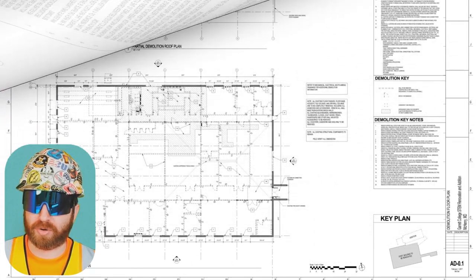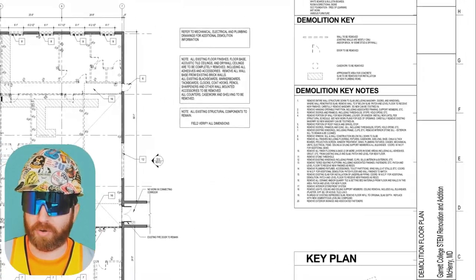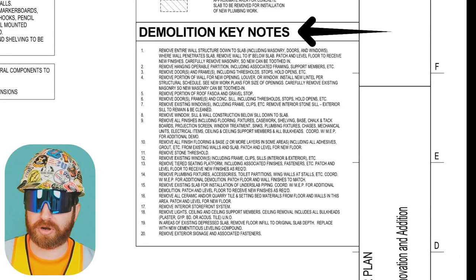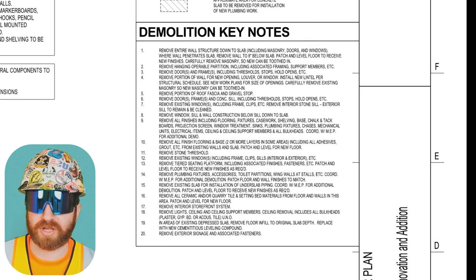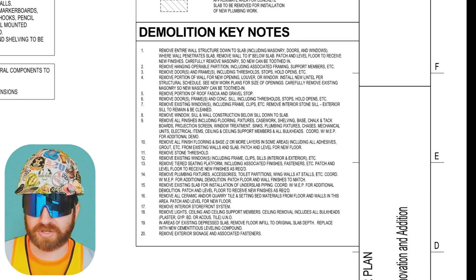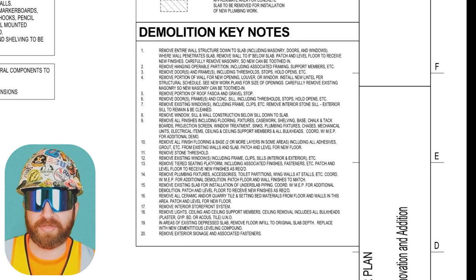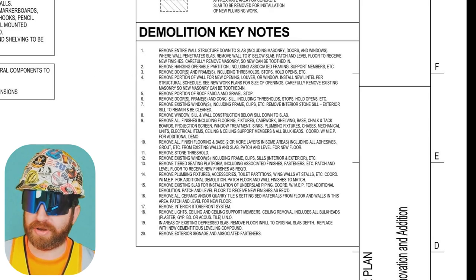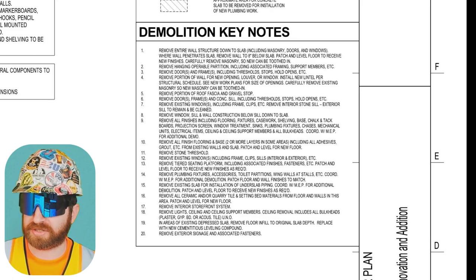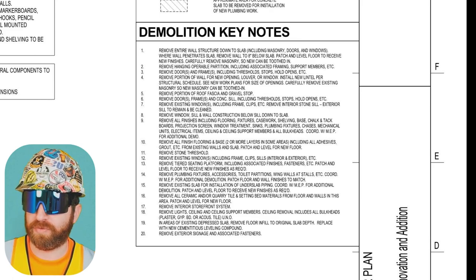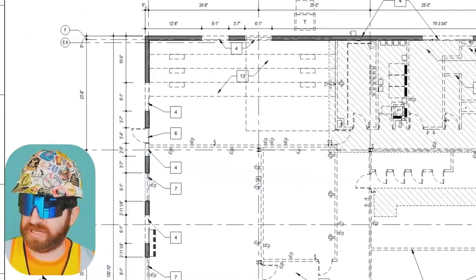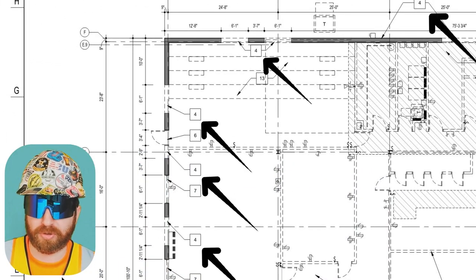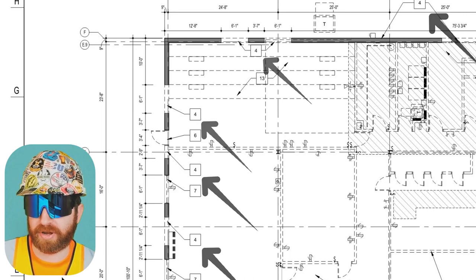I'm going to jump to AD0.1 to show you another type of note - the key note. The key note differs from the general notes because you'll actually find a number associated on the detail that you're looking at that relates back to this key note. The general notes are applicable to all the drawings; the key notes have specific call outs that you can find on the drawing. Looking at note number four: 'Remove portion of wall for new opening, louver or window. Install new lintel per structural schedule. See new work plans for size of openings. Carefully remove existing masonry so new masonry can be toothed in.' We then jump from the keynote section to the actual detail or drawing and find this note in multiple locations.